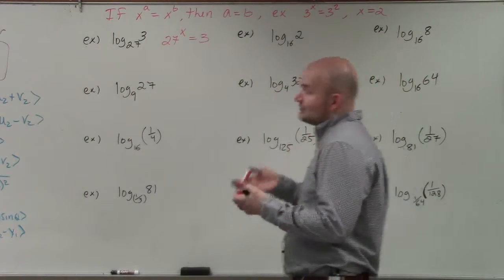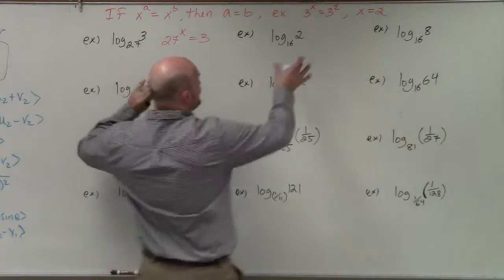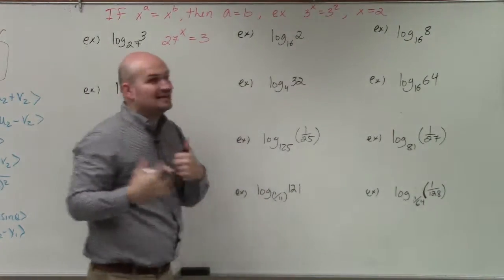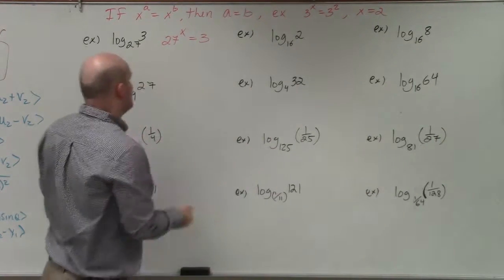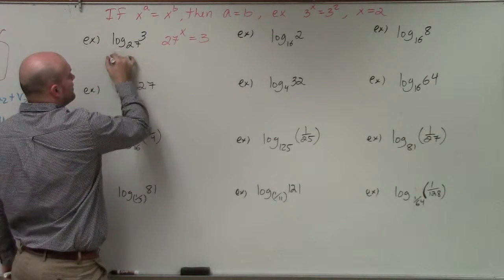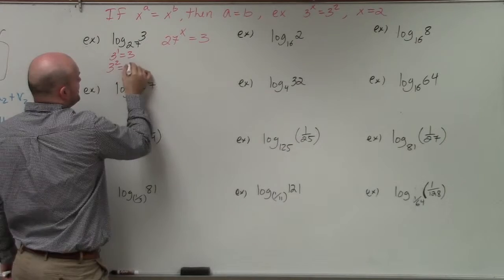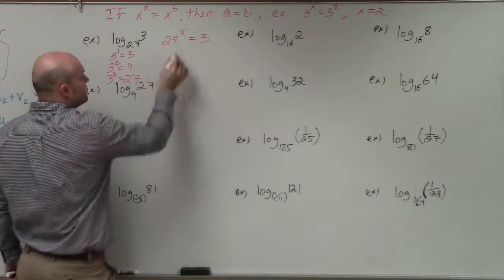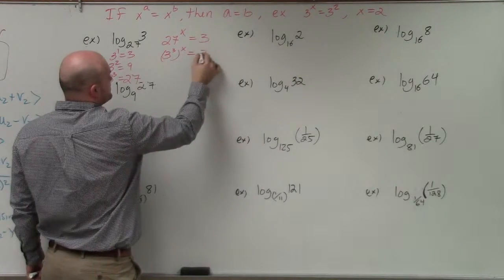What I can do is use the one-to-one property. If I can get an equation where the base is exactly the same, then I know my powers are going to be equal to each other. Well, 3 and 27 are related because 3 to the first power is 3, 3 squared is 9, and 3 cubed equals 27. So I can rewrite this as 3 cubed raised to the x equals 3.